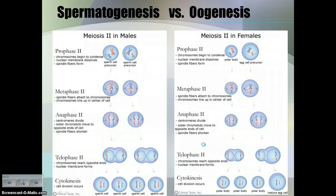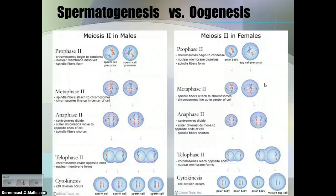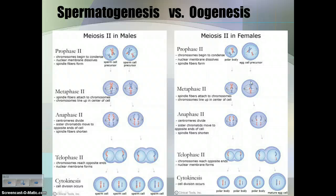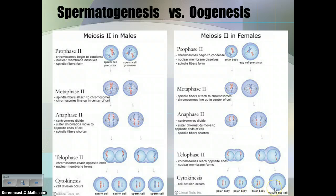Here's the difference between meiosis in males and females. In males, this process is called spermatogenesis, because we are producing sperm cells — you actually produce four sperm cells. In females, this process is called oogenesis, and you are producing an egg cell. In oogenesis, most of the cytoplasm and organelles go toward one cell, so three of the daughter cells become polar bodies, and the one cell that received all the cytoplasm matures into an actual egg following cytokinesis.